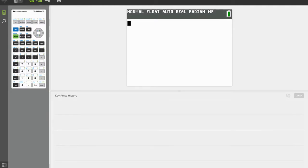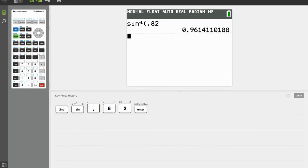We'll put that in the calculator, make sure you're in radians. So we're going to do second sine, 0.82, and we get a value of 0.96.